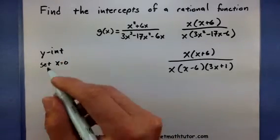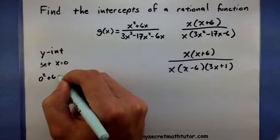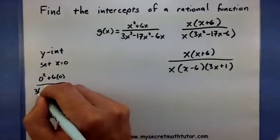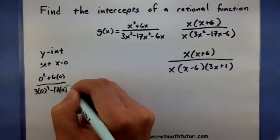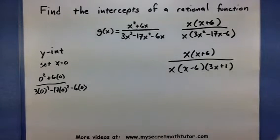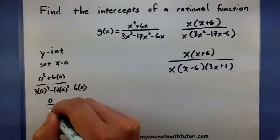So imagine just plugging in a 0 for all those x's. So 0 squared plus 6 times 0 all over 3 times 0 cubed minus 17, 0 squared minus 6 times 0. Now with all those zeros floating around it looks like this simplifies to 0 over 0.